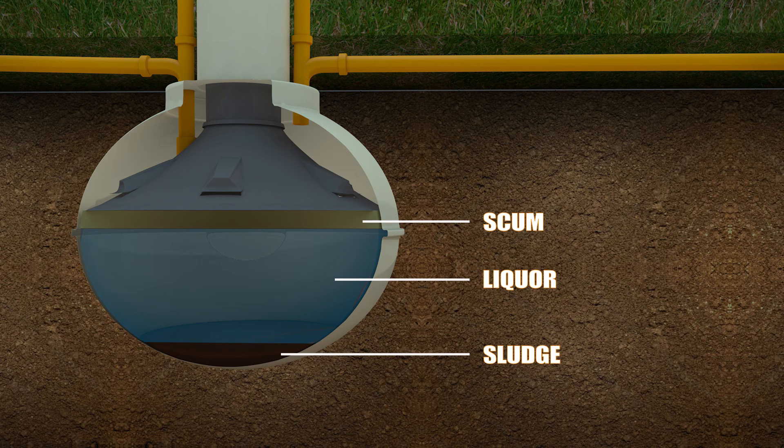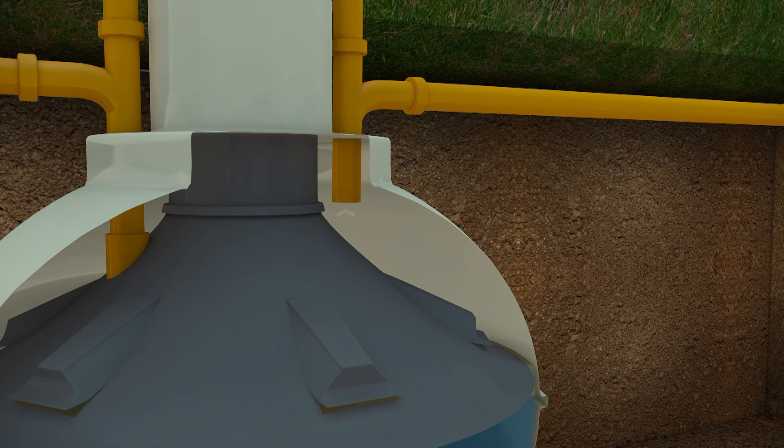The partially clarified liquor from between the two layers is allowed into the outfall drainage field or soak away.